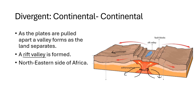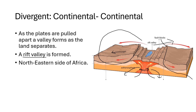The valley that forms is called a rift valley. A major example is on the northeastern side of Africa, where the continent is starting to break apart. As the rift valley continues to form, part of the continent will break away — that's what's happening in Africa, with the main continent on one side and a smaller chunk breaking off. Eventually that valley will fill with water as the ocean fills the gap, separating the continents.